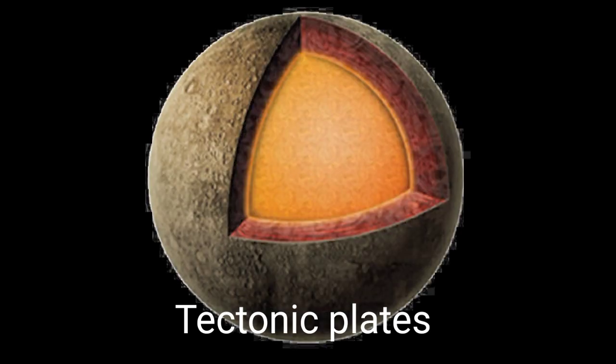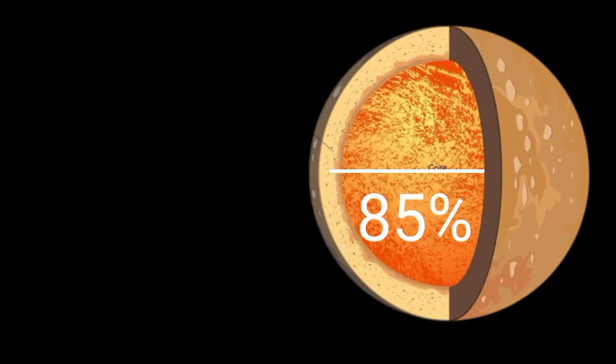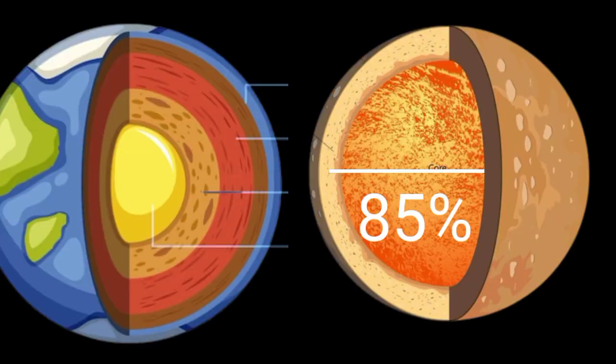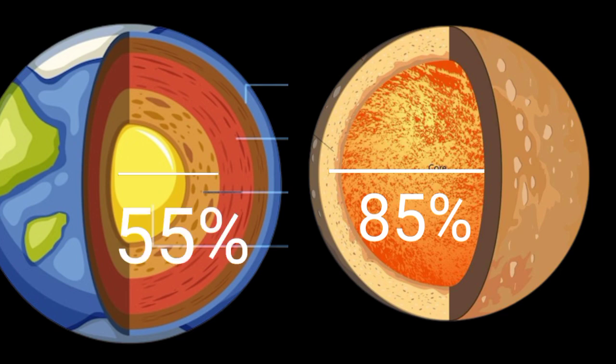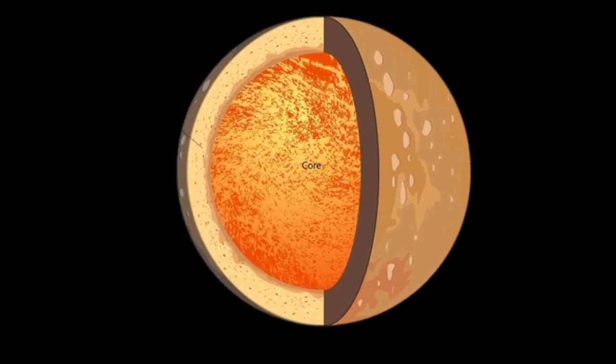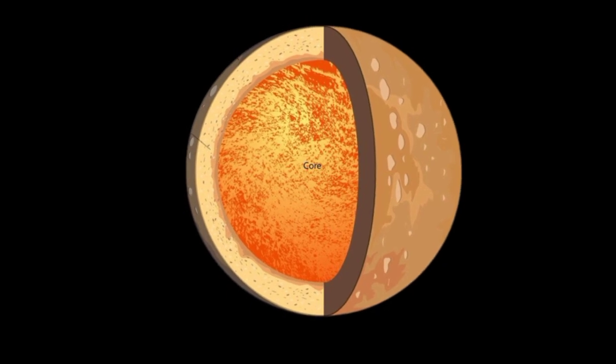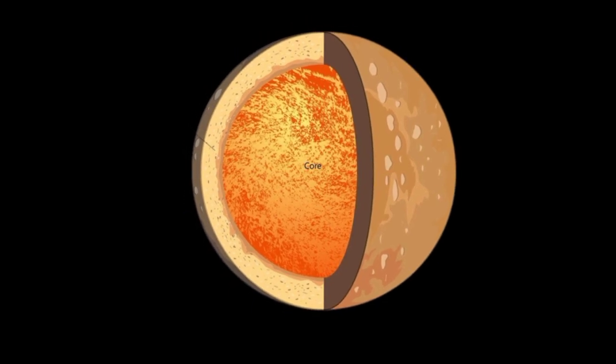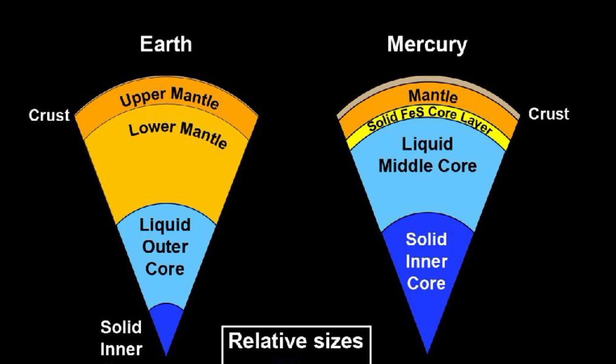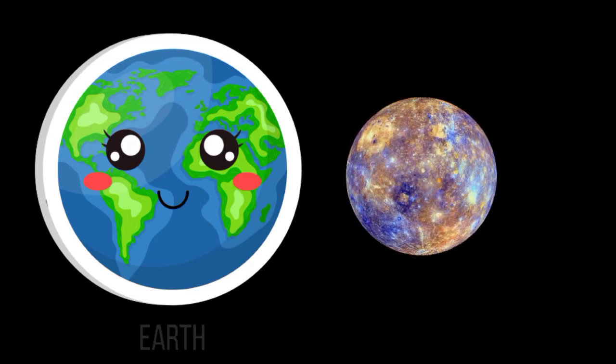Also, its iron core is enormous by comparison, making up 85% of its radius, while Earth's core accounts for 55%. Because of the core's exceptional size, it had a surprising influence on Mercury's overall size by causing it to shrink.